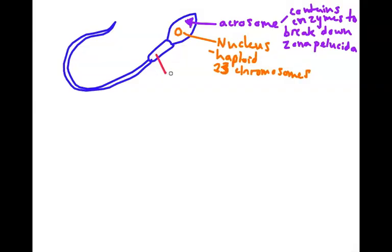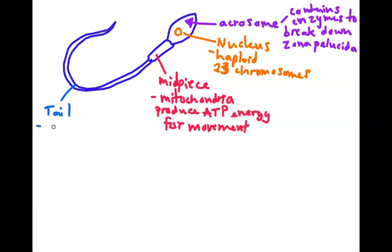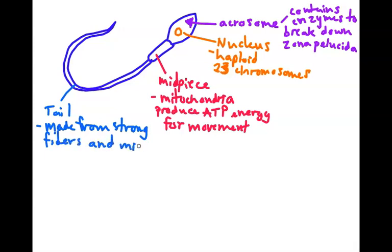The acrosome contains enzymes to break down the zona pellucida on the egg, which helps it get its genetic material into the egg. Over here in the mid-piece, there are mitochondria. Why are the mitochondria there? To produce ATP energy for movement, because the movement of the sperm is going to require a lot of energy. The tail is composed of strong fibers and microtubules. Those are the main pieces of the sperm and their general function.